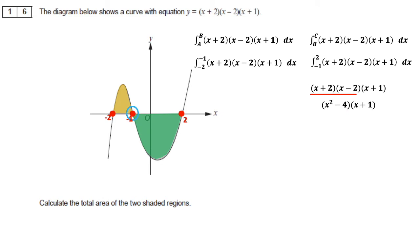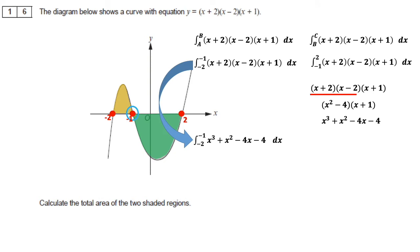Multiplying x squared minus 4 by x plus 1 gives x cubed plus x squared minus 4x minus 4, which is in the correct format to integrate. We'll integrate this with limits minus 1 and minus 2 first, then with limits 2 and minus 1.